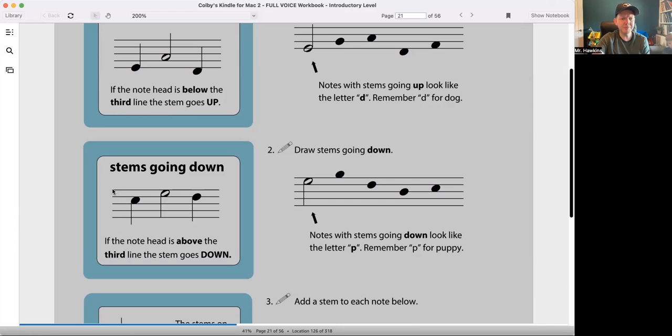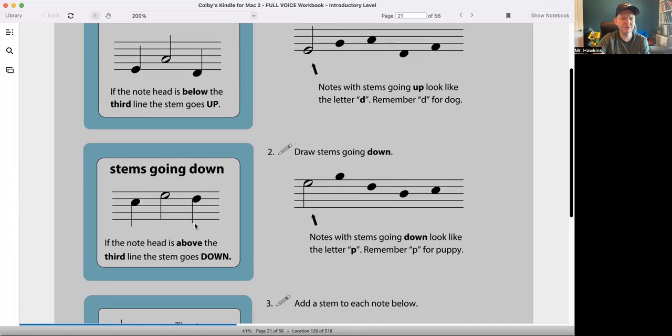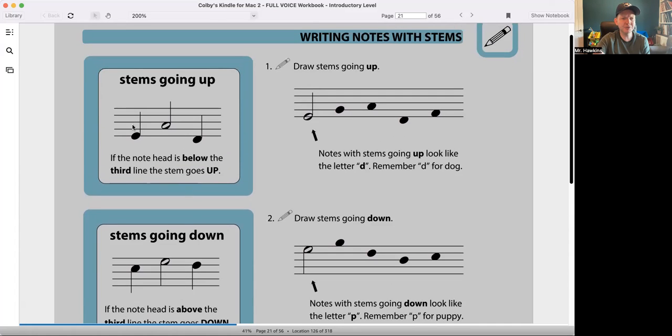So the staff, remember the staff is the five lines and four spaces we're writing notes on right now. If the note head is above the third line, then we write the tails going down on the left. And if it's below the third line, we write the stems going up on the right.